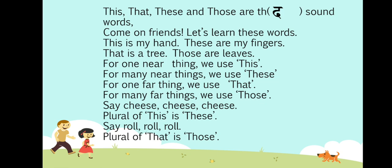This is my hand, these are my fingers. That is a tree, those are leaves. For one near thing, we use this. For many near things, we use these. For one far thing, we use that. For many far things, we use those.